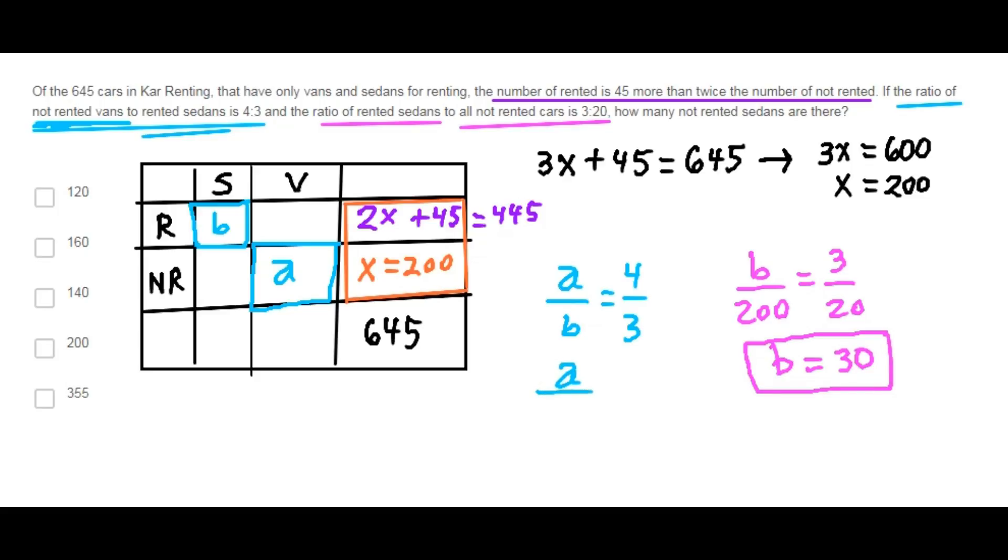I will replace that here. This is A over 30 equals 4 over 3. Solving for A, A equals 40. So, this is 40.